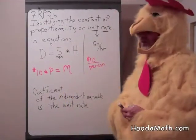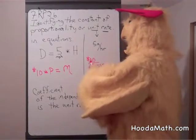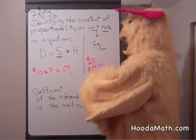A unit rate, or a constant of proportionality, ten dollars per one person.